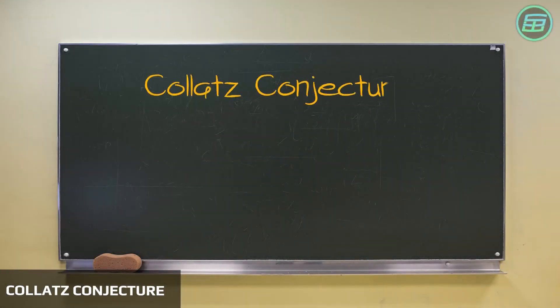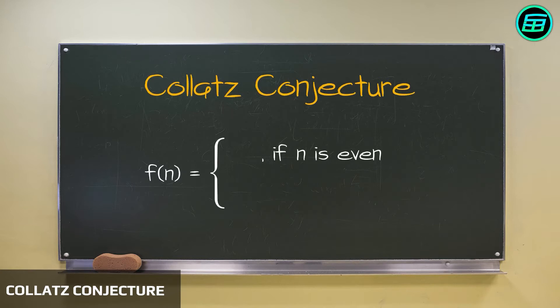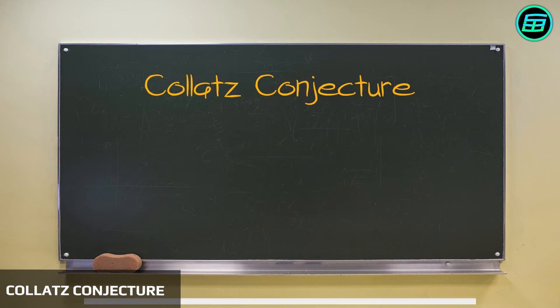What is the Collatz Conjecture? The so-called Collatz Conjecture is an unsolved question in maths that's easy to explain. Choose any positive integer. If it's even, divide it by 2. If it's odd, multiply by 3 and add 1. Repeat this process with the result and just keep on going.